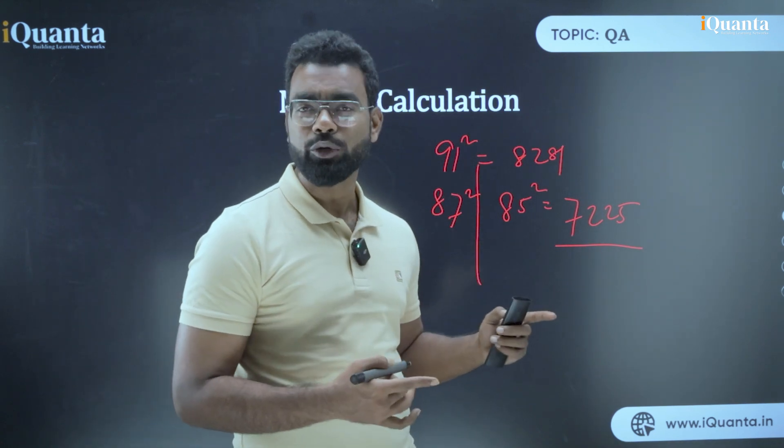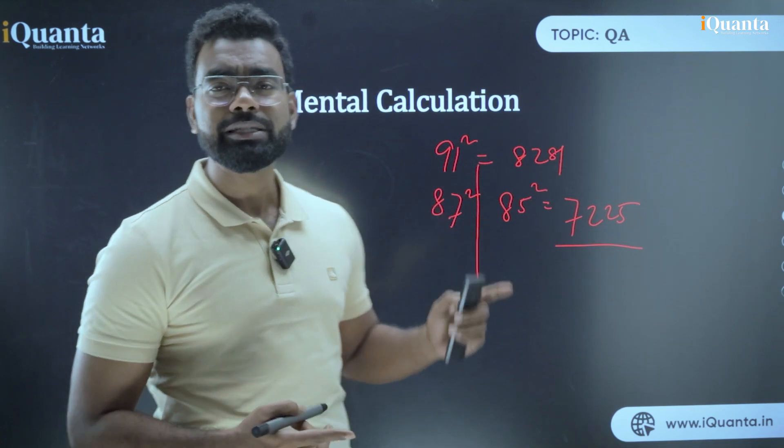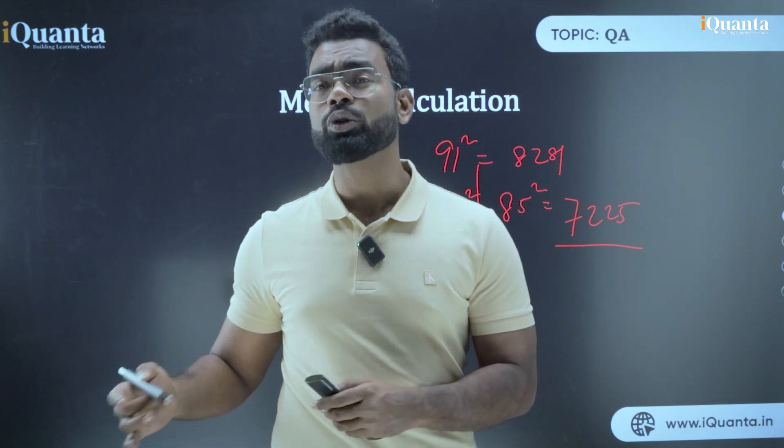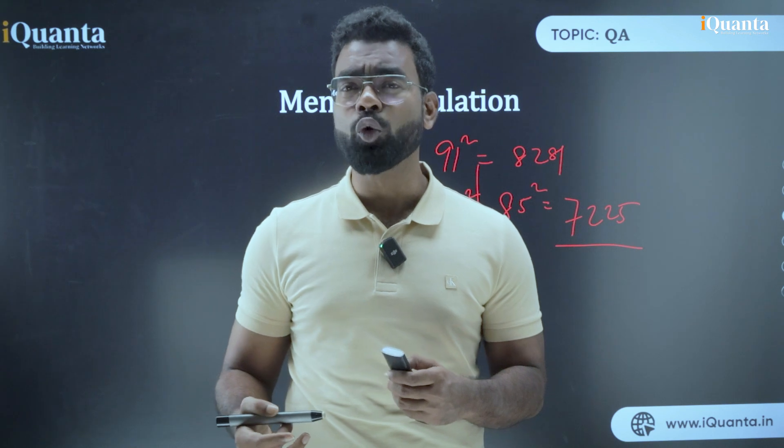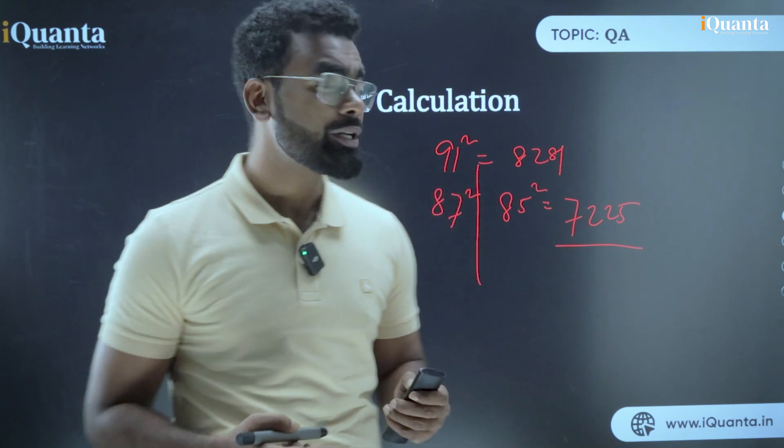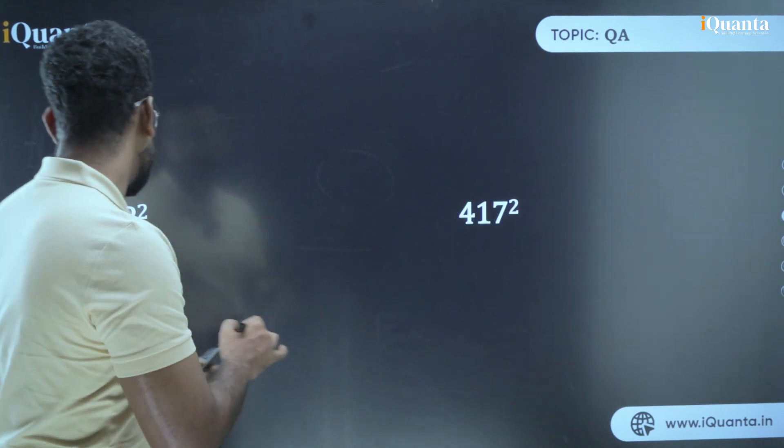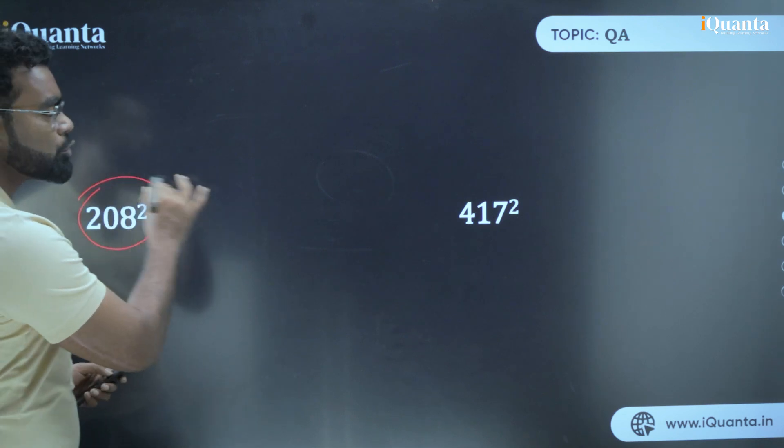The next thing we will discuss is if there is a number which is more than even 100. The square of the numbers which is close to multiple of 100. So let's take an example. Let's take two examples only. In two examples I will teach you what is basically happening.